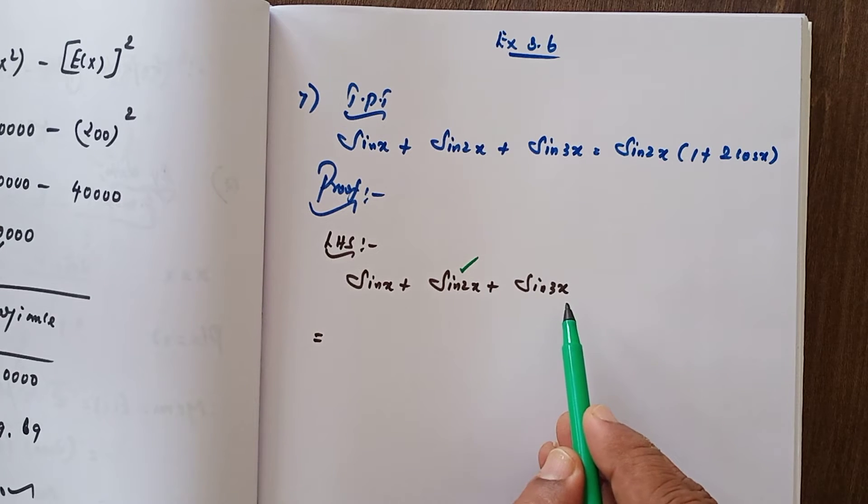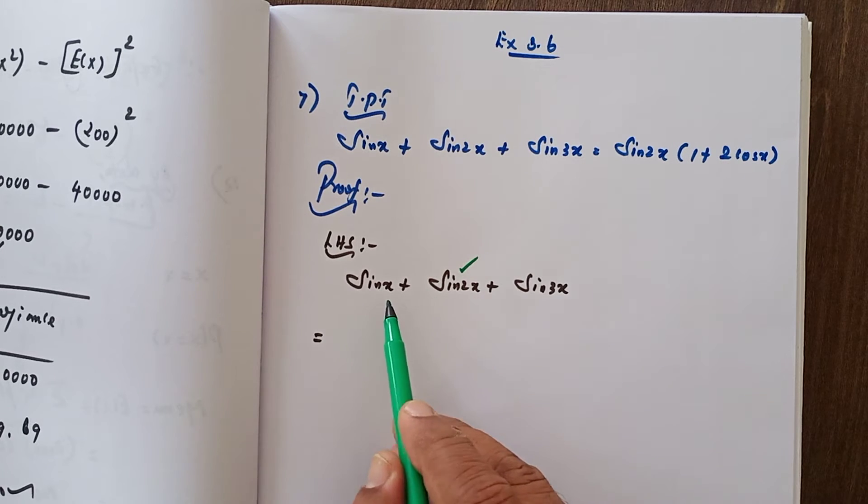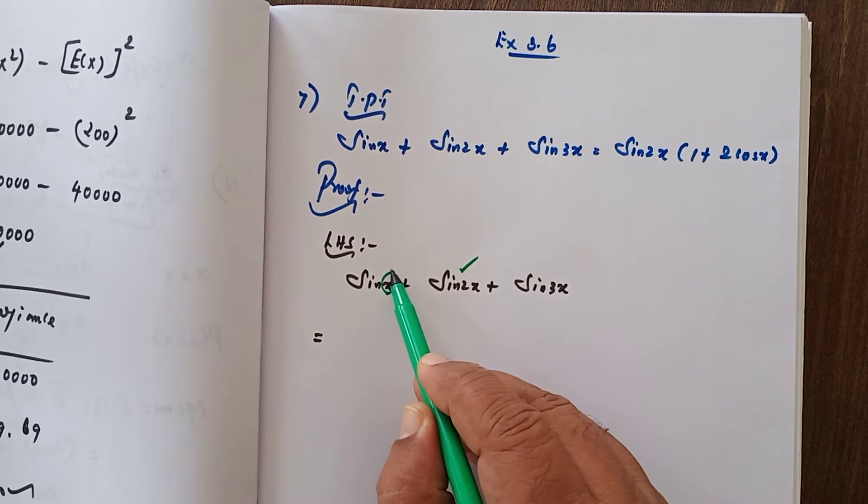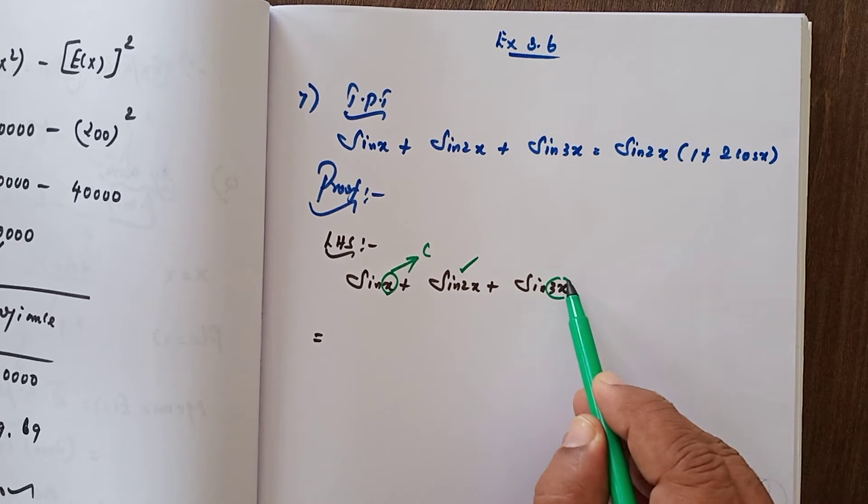Here sin x plus sin 3x, two different angles x and 3x. In between we have sin plus, so I can go for the sin c plus sin d formula.